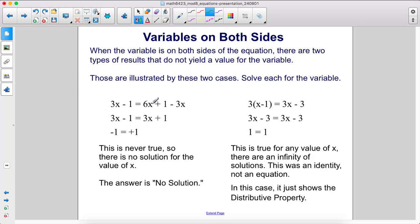Here, when we combine like terms, we see that there's a 3x on both sides. If you subtract 3x from both sides, it goes away entirely, and it says negative 1 equals positive 1. This is never true.